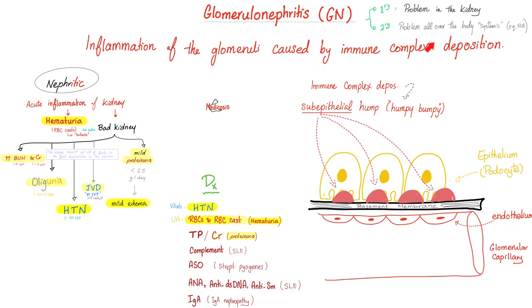Glomerulonephritis is inflammation of the glomeruli of the kidney, usually caused by immune complex deposition. The deposition of those immune complexes — made of antigens and antibodies — could be sub-epithelial, intramembranous, or sub-endothelial, depending on the disease.